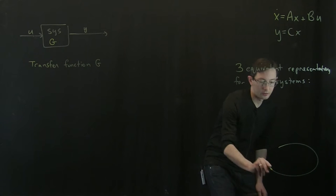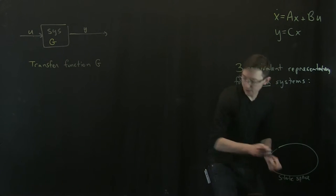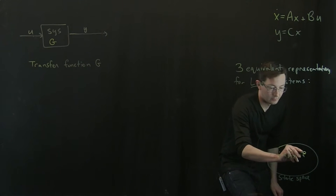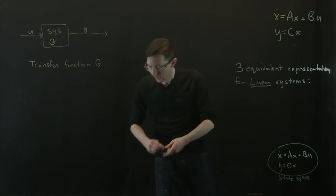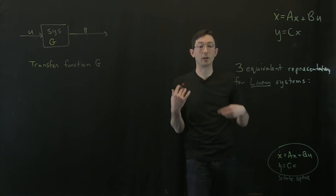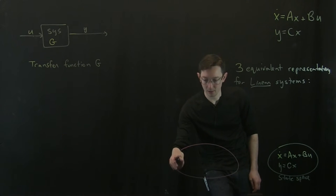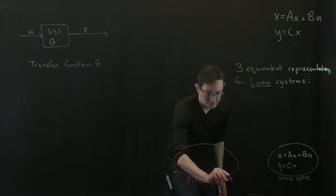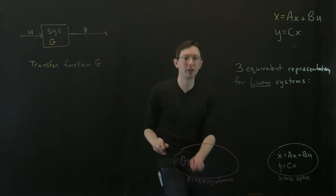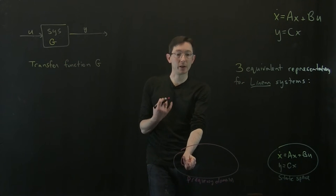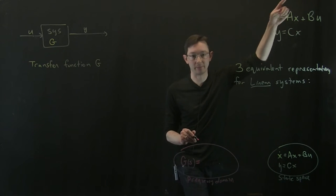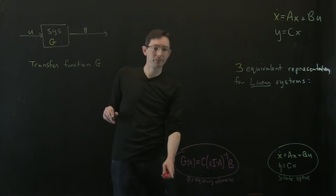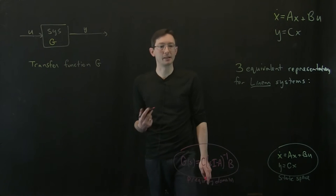The first representation is state space — essentially our ODE: ẋ = Ax + Bu, y = Cx. In addition to state space, we have the frequency domain or transfer function representation. This is our transfer function G(s), where s is a Laplace transform variable. G(s) = C(sI − A)⁻¹B. I'll derive this for you later, but this is the expression in the frequency domain.